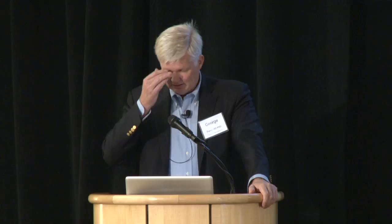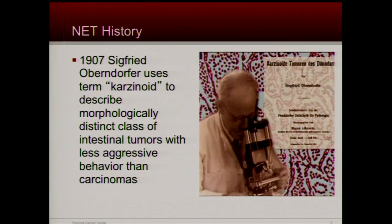In the history, this goes back to 1907 when a German pathologist termed this carcinoid. Carcinoid was for kind of like cancer — not really like cancer, but kind of like cancer. Yes, it could grow, yes it could spread, but it did so at a glacial pace, and therefore it didn't acquire the cancer name, which is carcinoma — the term we use for most cancers.